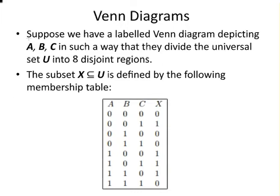The job relates to this subset X, which is a subset of U, and it's defined by the following membership table. What we're going to do is draw out the Venn diagram and then shade in the areas that correspond to X.